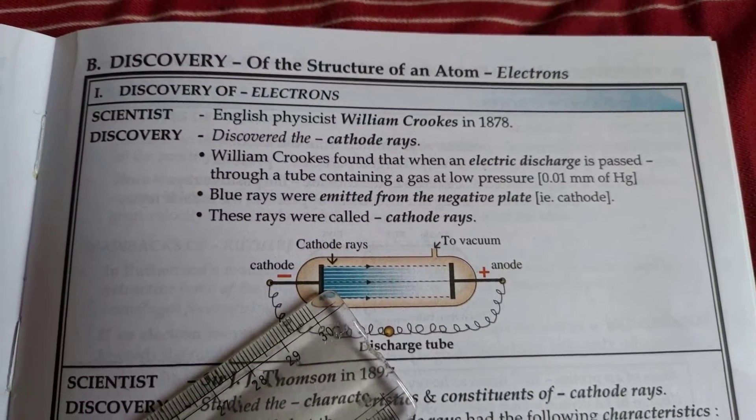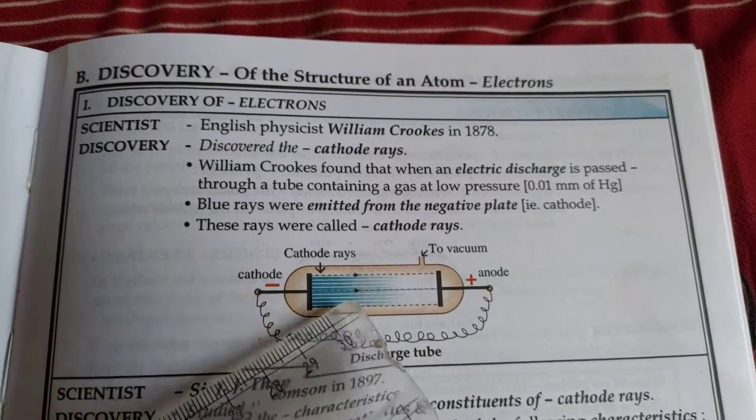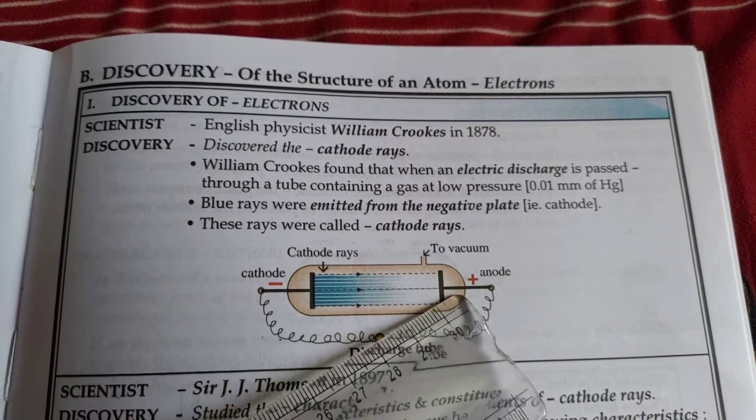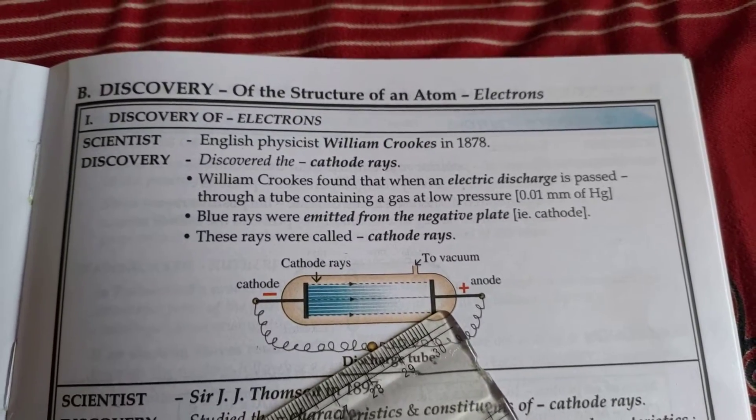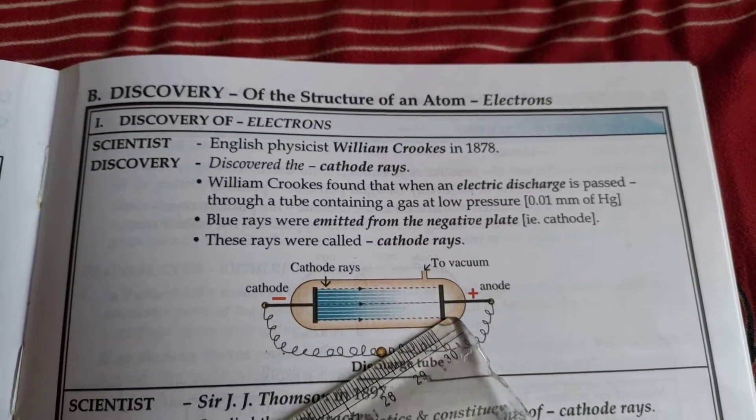But to his surprise he found that the electricity kept on transmitting from cathode towards anode even in the absence of air. Now before you is an experiment that shall be carried out for the cathode ray. You can see this is a cathode ray tube where the two electrodes are attached. On passing of the electrical discharge you can see a streak of light. The same experiment was carried out by William Crookes.